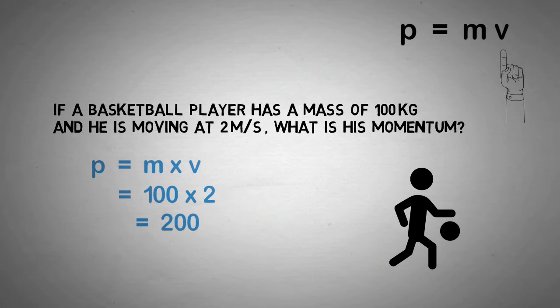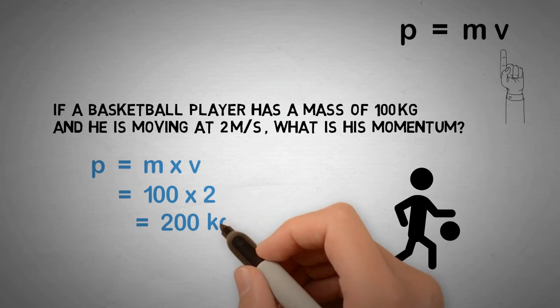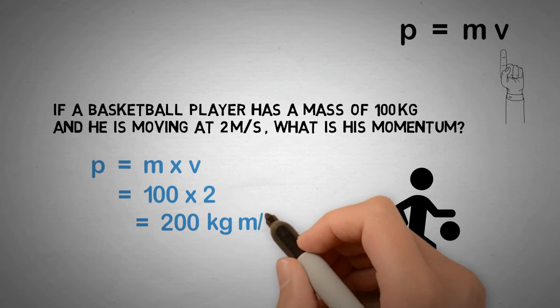Don't forget the units. Kilograms for mass and meters per second for velocity. So the units for momentum is kilograms meters per second.